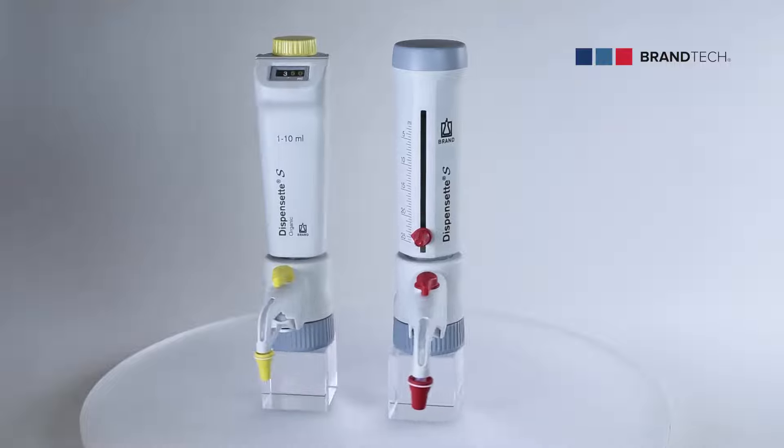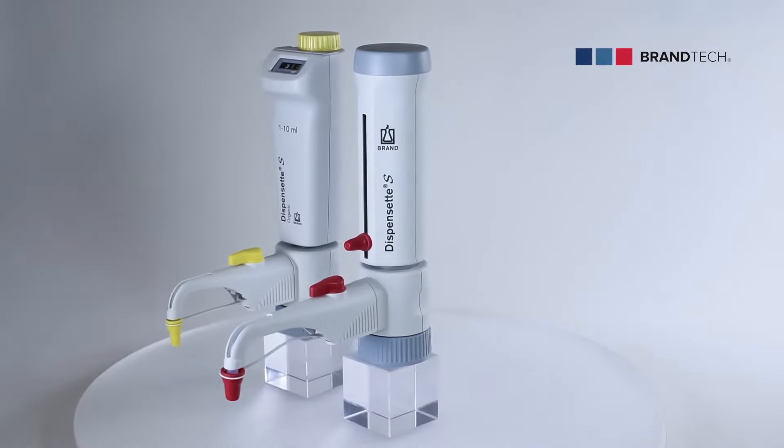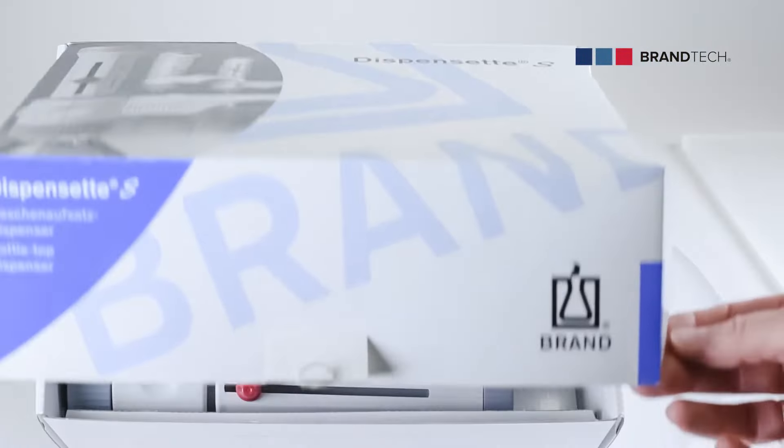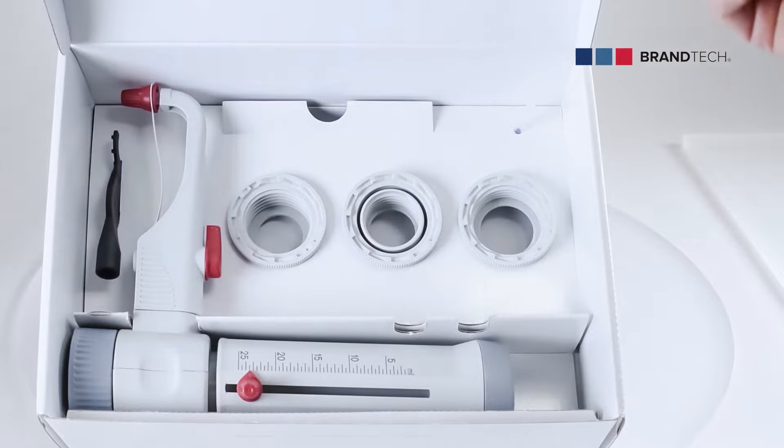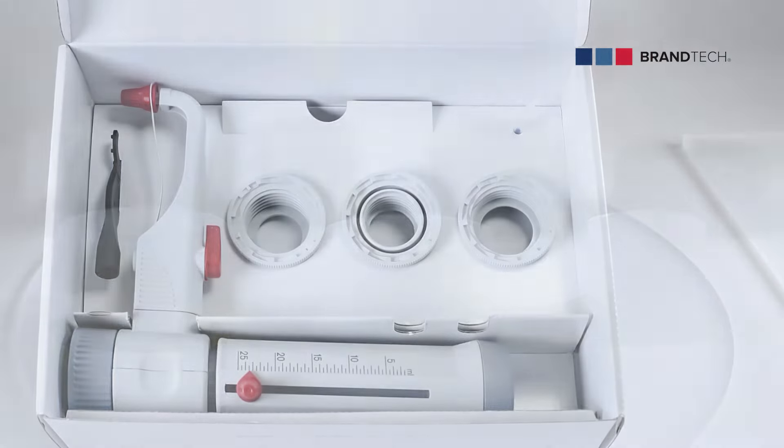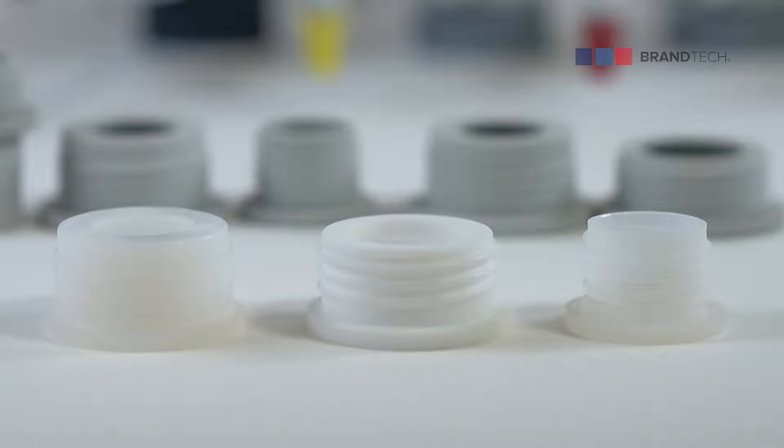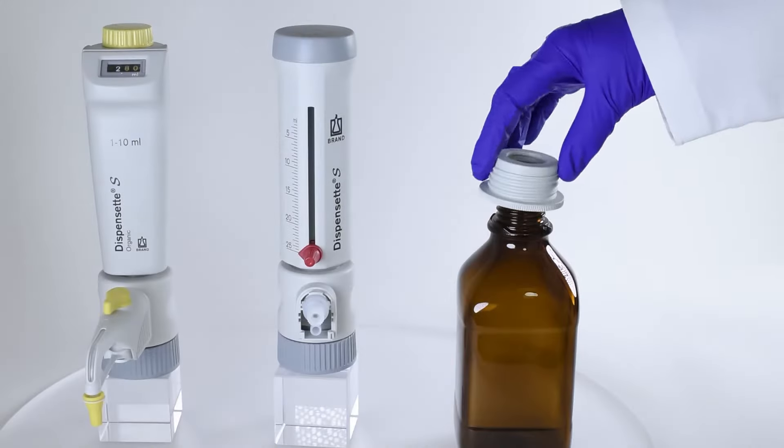The Dispenset S and Dispenset S Organic both have 45mm threads. They are also supplied with a selection of thread adapters to fit most common laboratory bottles. Select the appropriate adapter and apply it to your bottle.